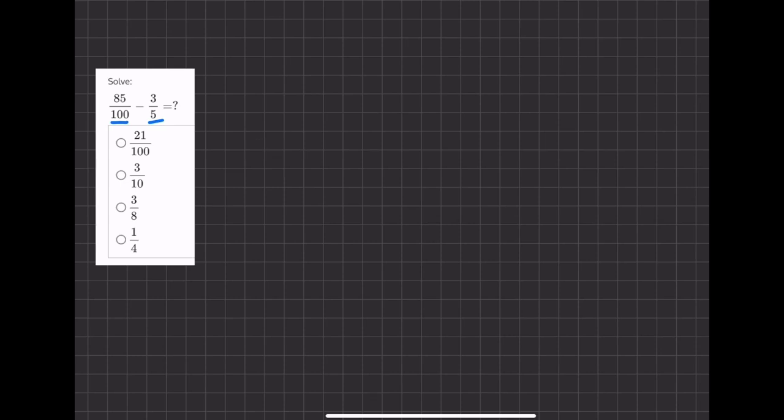If we take 85/100 and simplify it by dividing by 5 over 5, that's like dividing by 1 so that's allowed. 85 divided by 5 is 17 and 100 divided by 5 is 20.